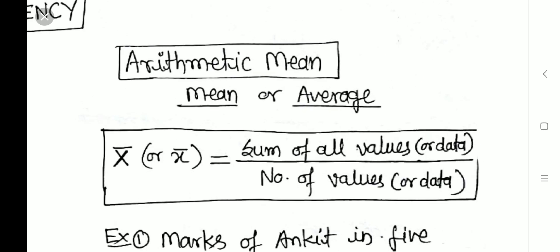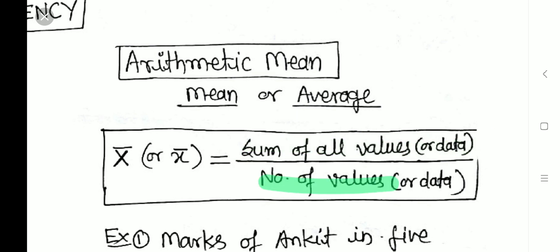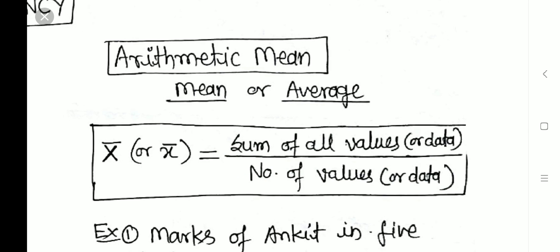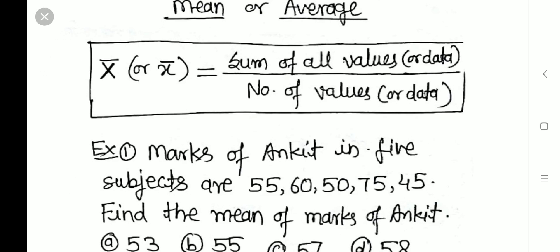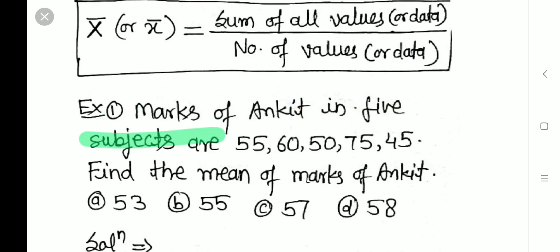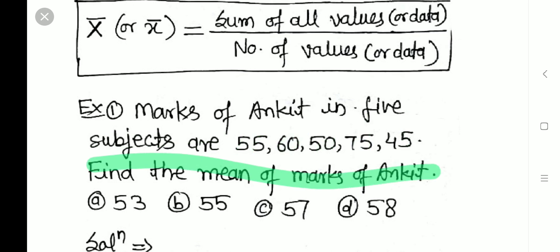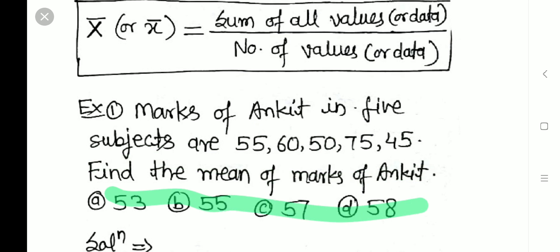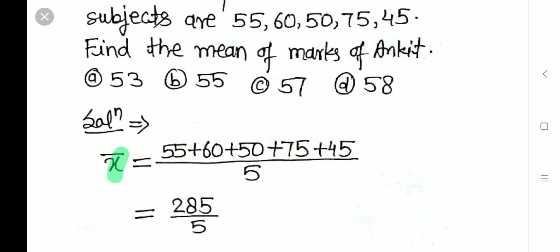The symbol of mean or arithmetic mean or average is x̄ (x-bar). It is calculated as the sum of all observations divided by the number of all observations. For example: the marks of Ankit in five subjects are 55, 60, 50, 75, and 45. Find the mean marks. The options are 53, 55, 57, 58. The way to calculate is to add all five values and divide by five.